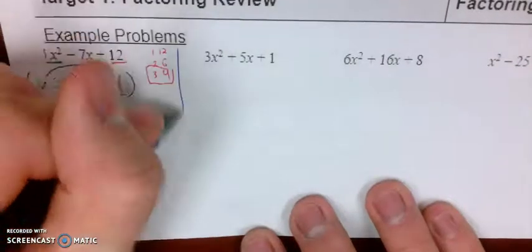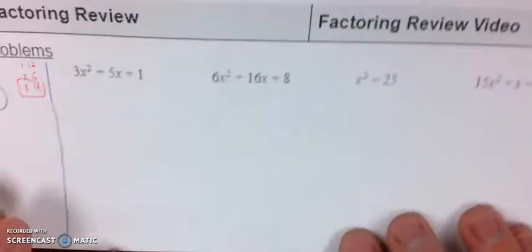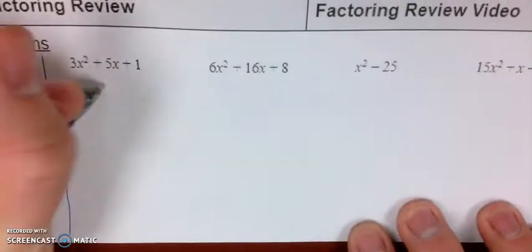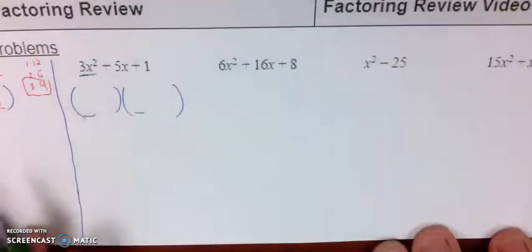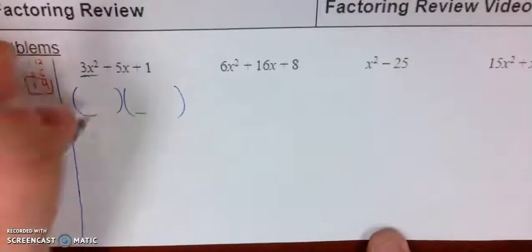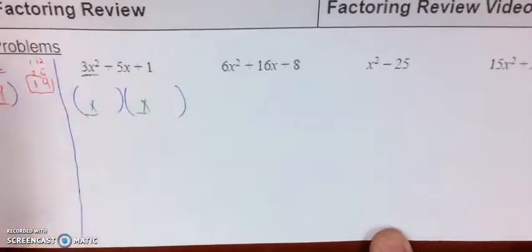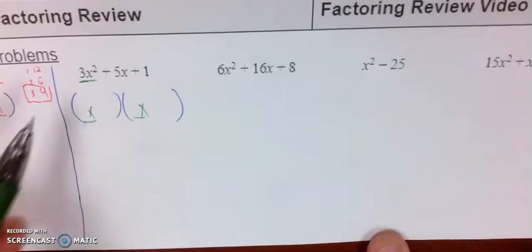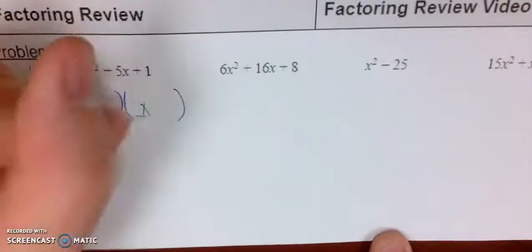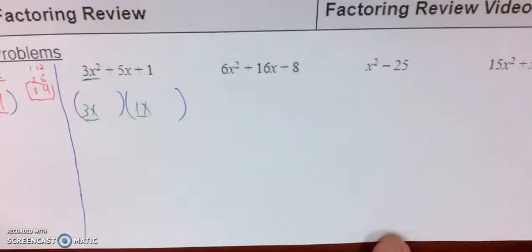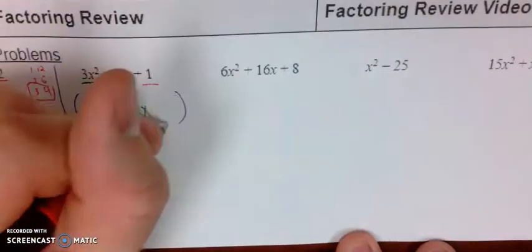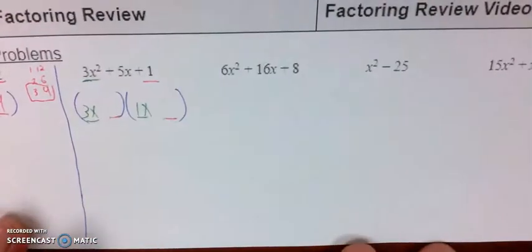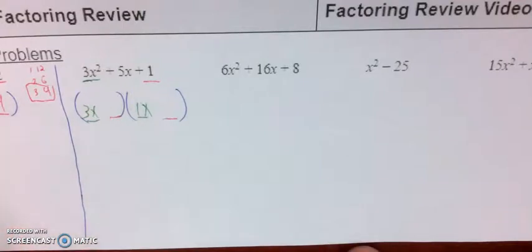The next one is going to be slightly more challenging because now we've got a coefficient out front. The process, however, is going to be the exact same. I know the first term in each parenthesis chunk has to be things I would multiply to be 3x squared. The coefficients attached just have to be numbers I multiply to be 3. Fortunately, there's only one way to do that, and that's just 3 times 1.